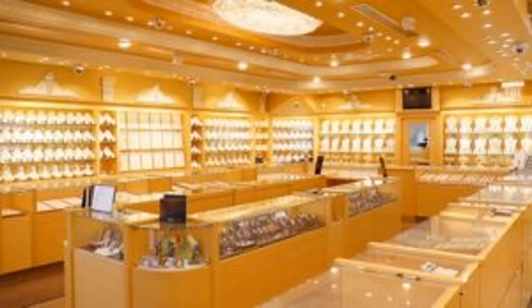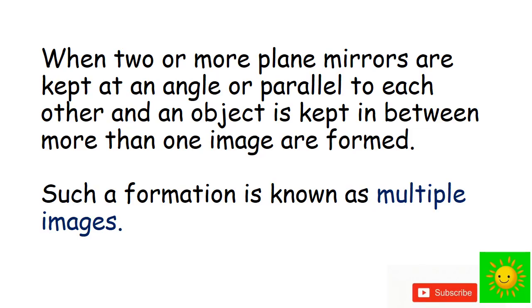Let's see multiple images. To show the number of items as increased in jewelry shops, plane mirrors are kept behind the items and parallel to each side. Light is reflected by those mirrors and a large number of images can be observed. We can see this in jewelry shops where multiple images are formed. When two or more plane mirrors are kept at an angle or parallel to each other and an object is placed in between, more than one image is formed. Such formation is known as multiple images.